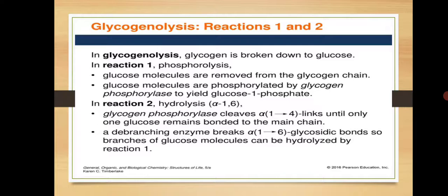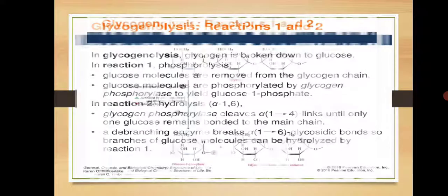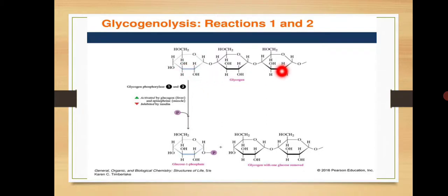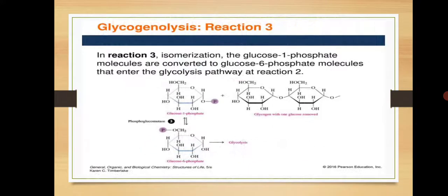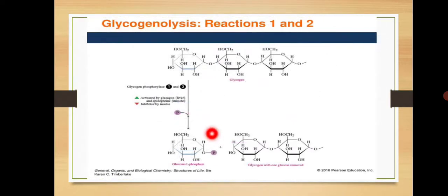In the second step, the debranching enzyme becomes active. Glycogen phosphorylase clips alpha-1,4 linkages one by one sequentially until one glucose remains bonded to the main chain, then the debranching enzyme breaks the alpha-1,6 linkage and two branches are separated.